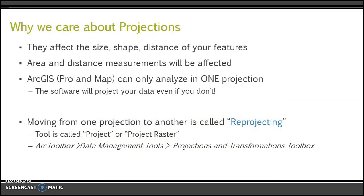Why do we care? Because the projections you choose affect size, shape, distance, and direction. GIS software can only analyze in one projection — if you throw three datasets in three different coordinate systems into a tool, the tool will let you do that, but in the background all datasets are being migrated to a single coordinate system that the software chose, typically the first dataset added. You don't want that happening in the background. So step one for most analysis exercises: check the coordinate systems of your data, choose the best one, and move all your data into that common coordinate system using the Project tool, found in Data Management Tools.